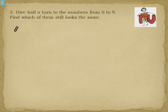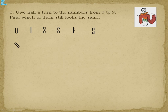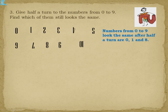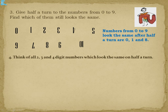Third, give half a turn to the numbers from 0 to 9 and find which still look the same. Just as we did for alphabets, checking each number one by one, the numbers that look the same after half a turn are: 0, 1, and 8. The others — 2, 3, 4, etc. — do not look the same.